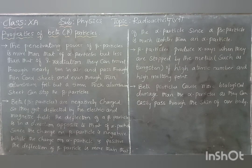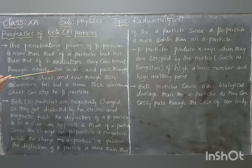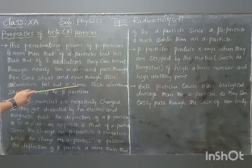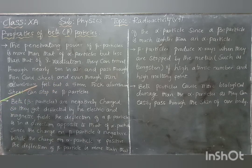The penetrating power of beta particles is more than that of alpha particles but less than gamma radiation — it is in between. They can travel through nearly 5 meters in air and pass through thin card sheet and even thin aluminum foil. However, a 5-millimeter-thick aluminum sheet will stop the beta particles entirely.